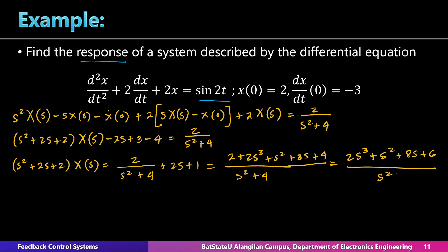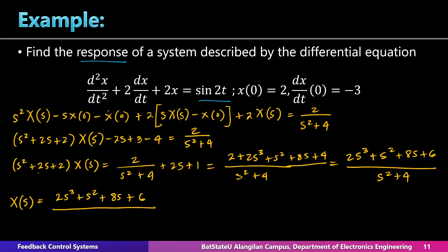Solving for X(s), the denominator becomes (s² + 4)(s² + 2s + 2). The quadratic s² + 2s + 2 is not factorable — its roots are complex conjugates — so we leave it as an irreducible quadratic. Therefore X(s) = (2s³ + s² + 8s + 6) / [(s² + 4)(s² + 2s + 2)].